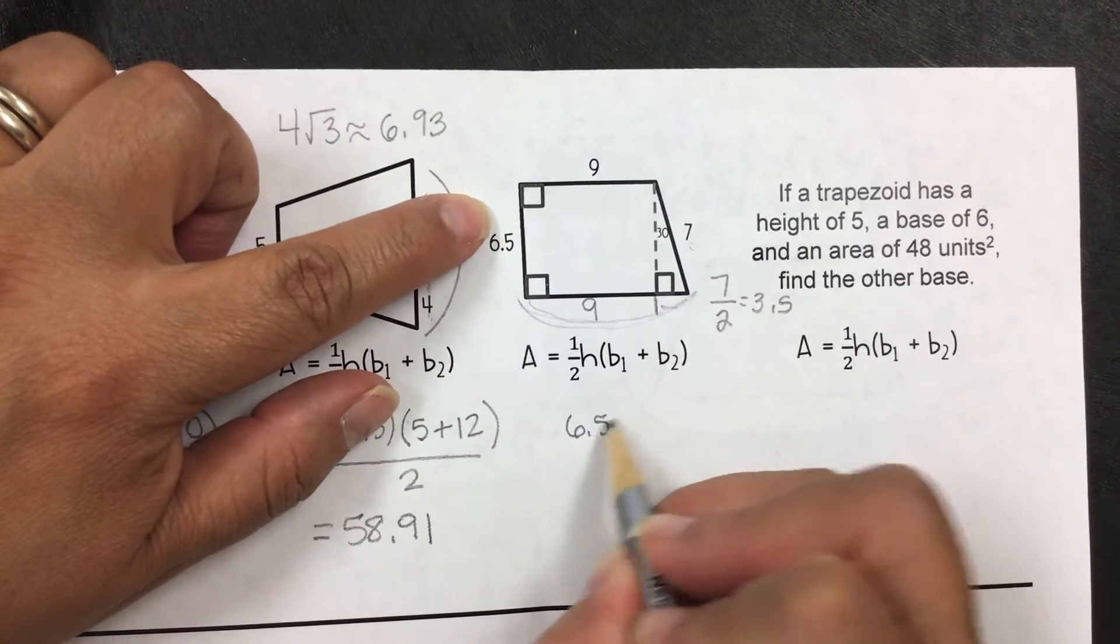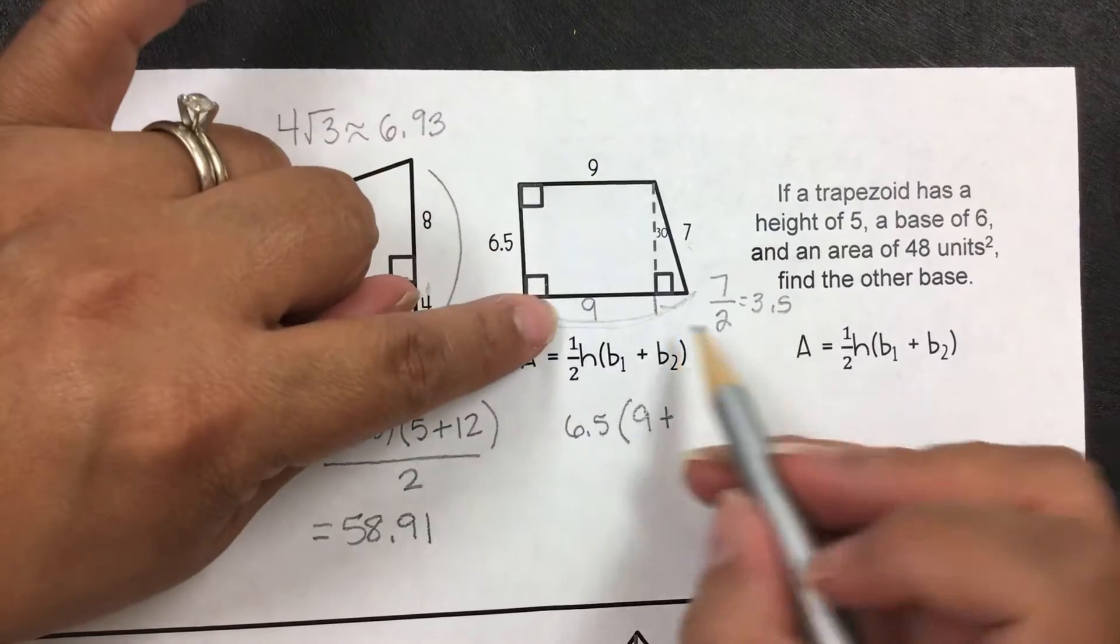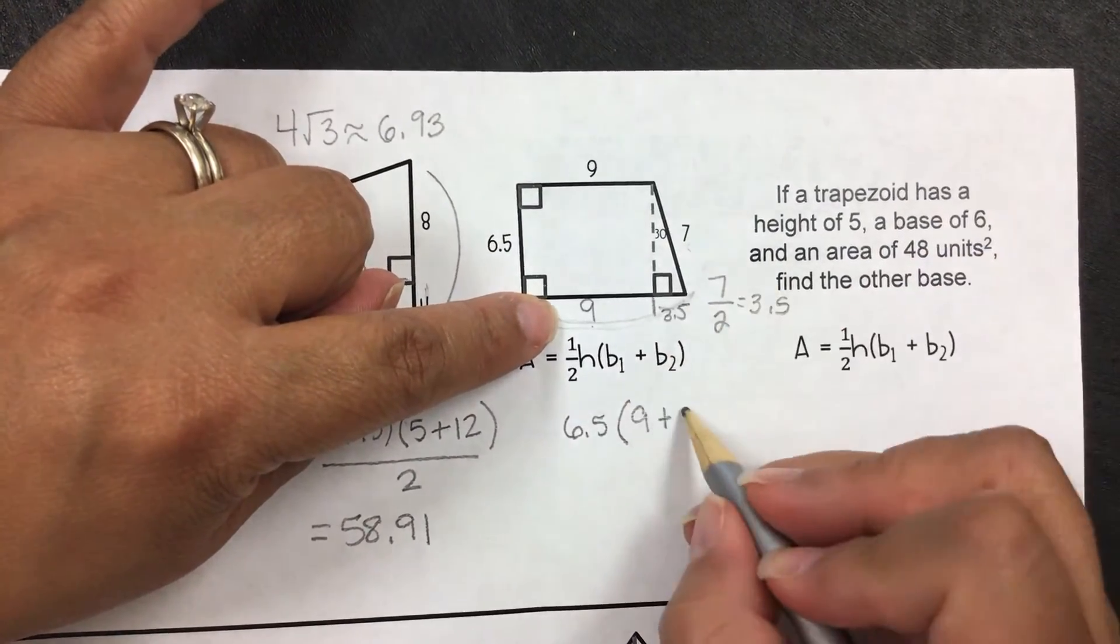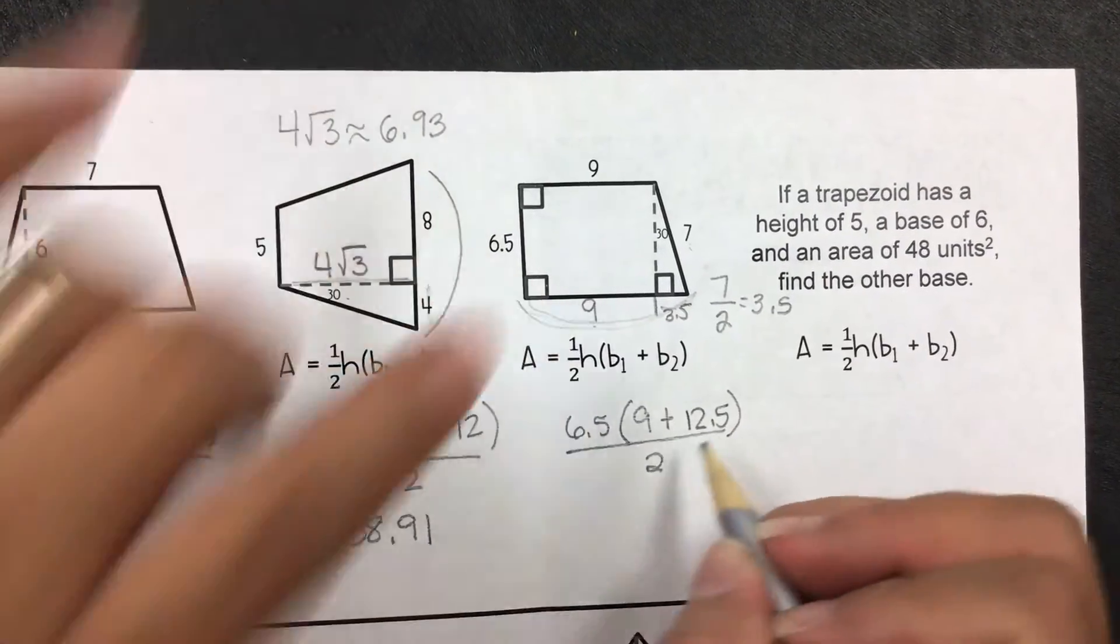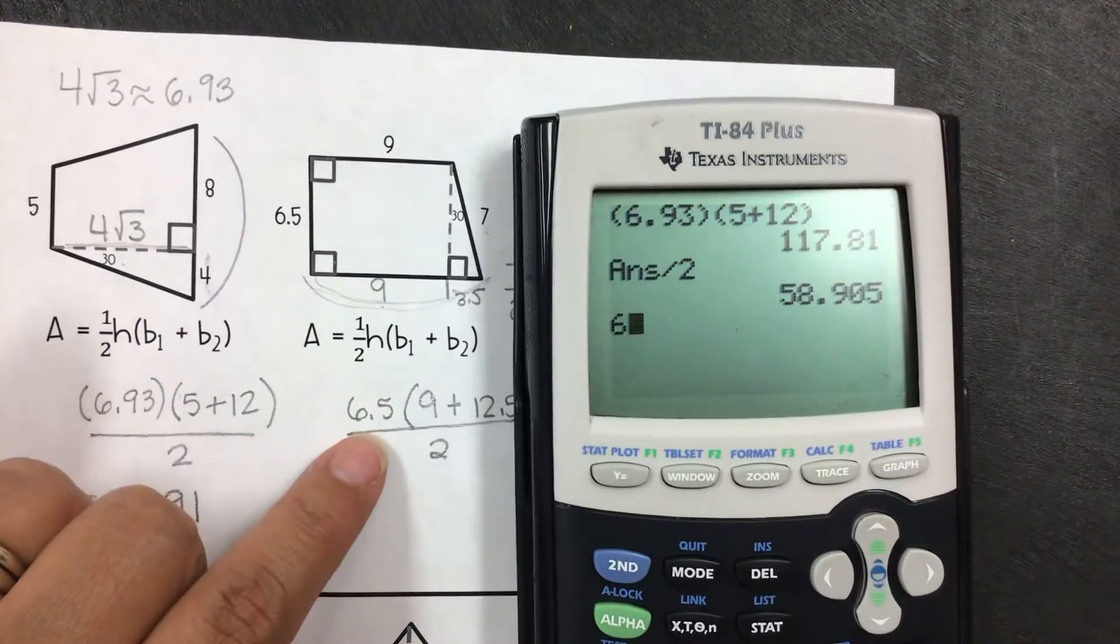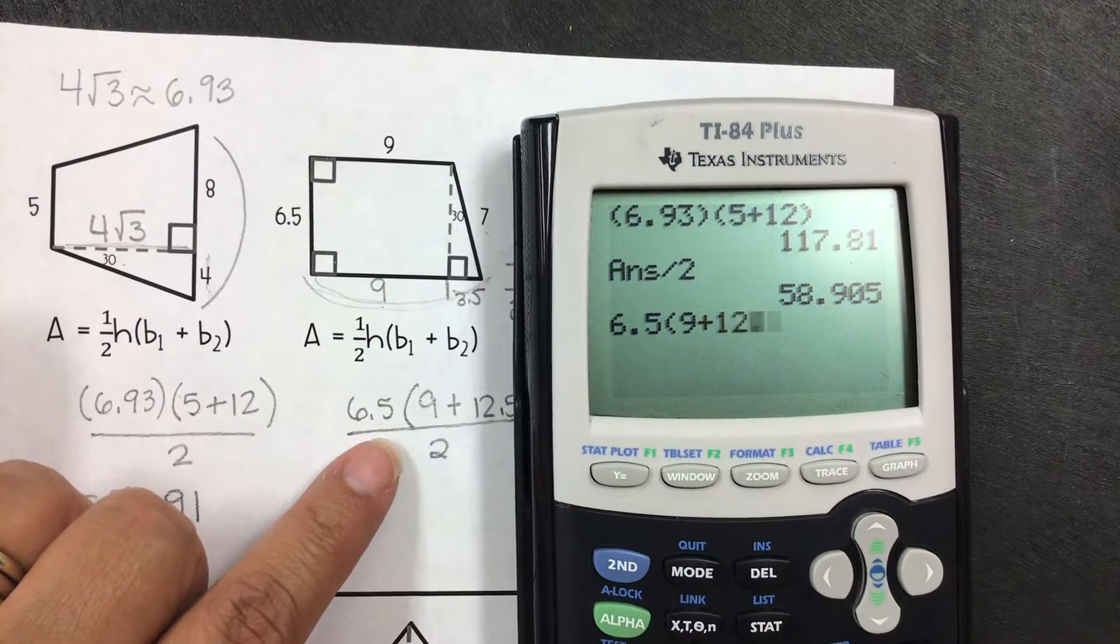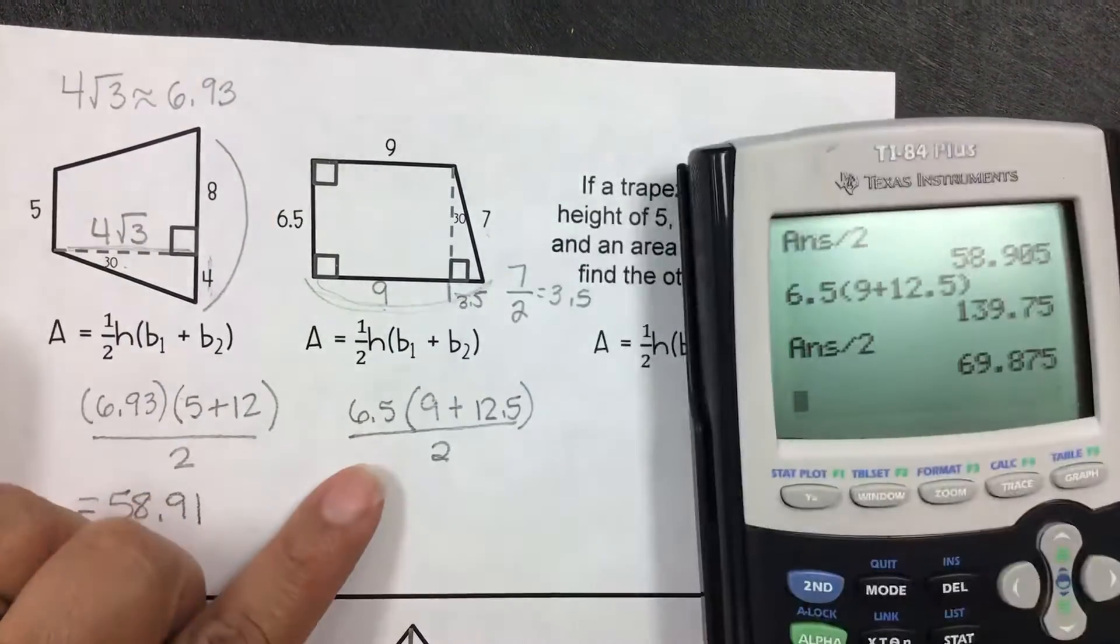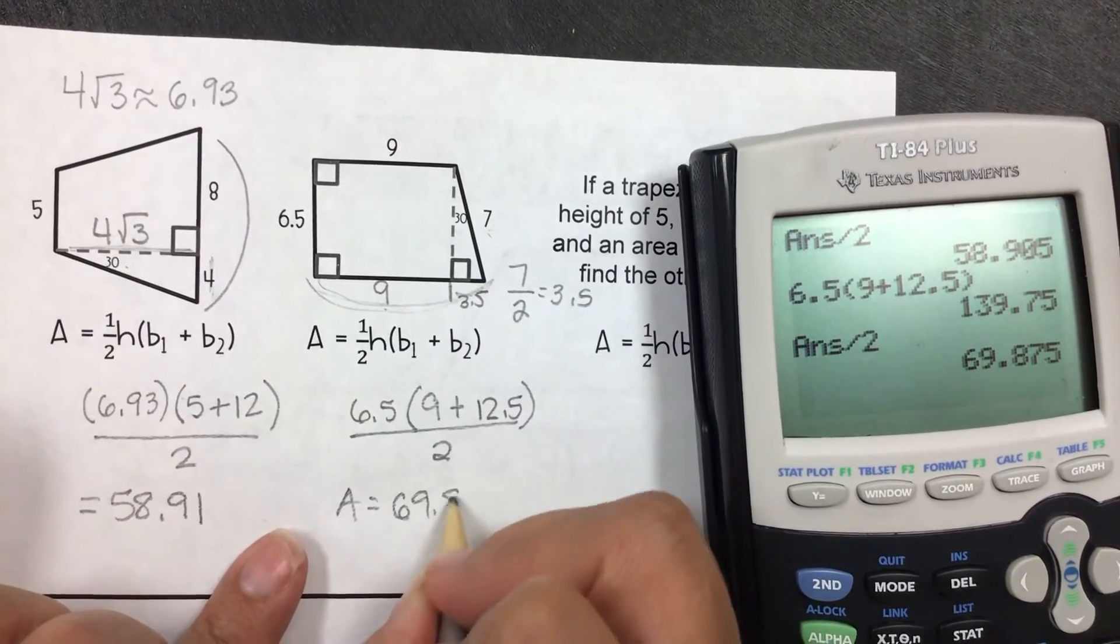Here's the height over here, so we didn't need to solve for it. So the height is 6.5 times the bases. One is 9, and then the other one is 9 plus that 3.5, which gives you 12.5, and then divide it by 2. Go ahead and just put it in the calculator. 6.5 times 9 plus 12.5, and then divide by 2. The area is 69.88.